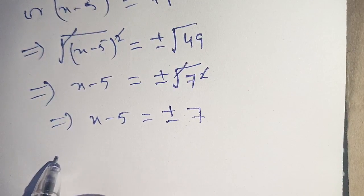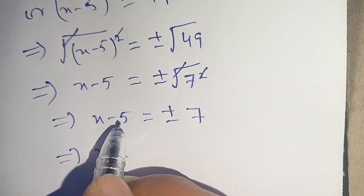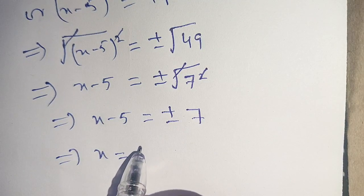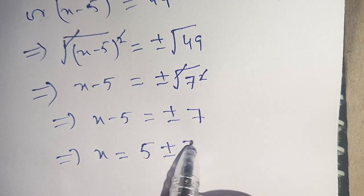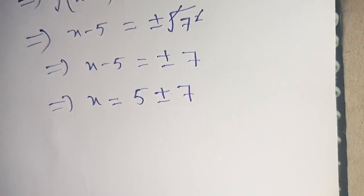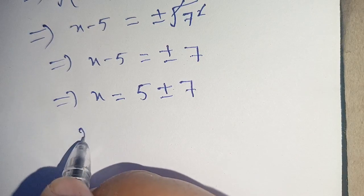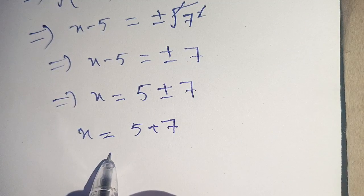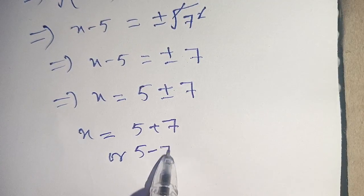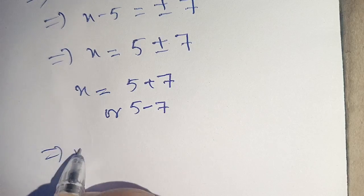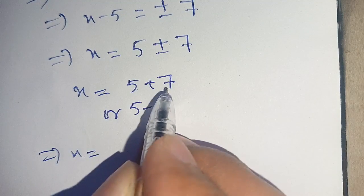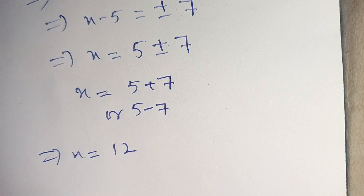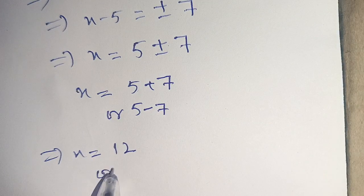Now in the next step, we shift minus 5 from the left side to the right side, where it becomes plus 5, giving x is equal to 5 plus or minus 7. So there are two values of x: x is equal to 5 plus 7, which is 12, and 5 minus 7, which is minus 2.